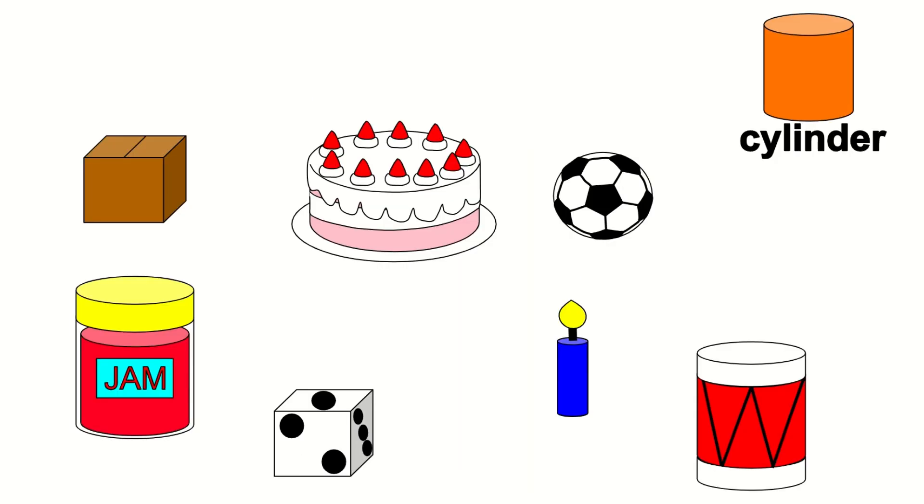Let's look for 4 things that are shaped like a cylinder. What do you see that's shaped like a cylinder? The cake is shaped like a cylinder.